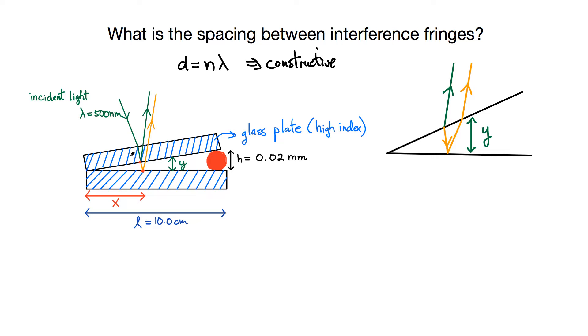Now when you reflect from a high index, which is glass, to air, that doesn't produce a phase shift for the reflected light. So there's no phase shift here, and then that light ray gets transmitted. So there's no overall phase shift right here between both of those.